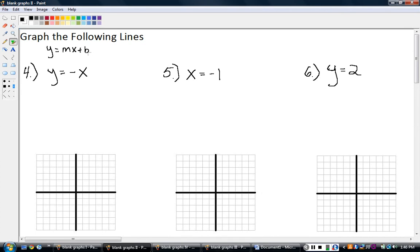Start at the intercept and then use the slope to get to the next point. This may not look like MX plus B, but it is. There's no B here, so you can think of it as plus zero.